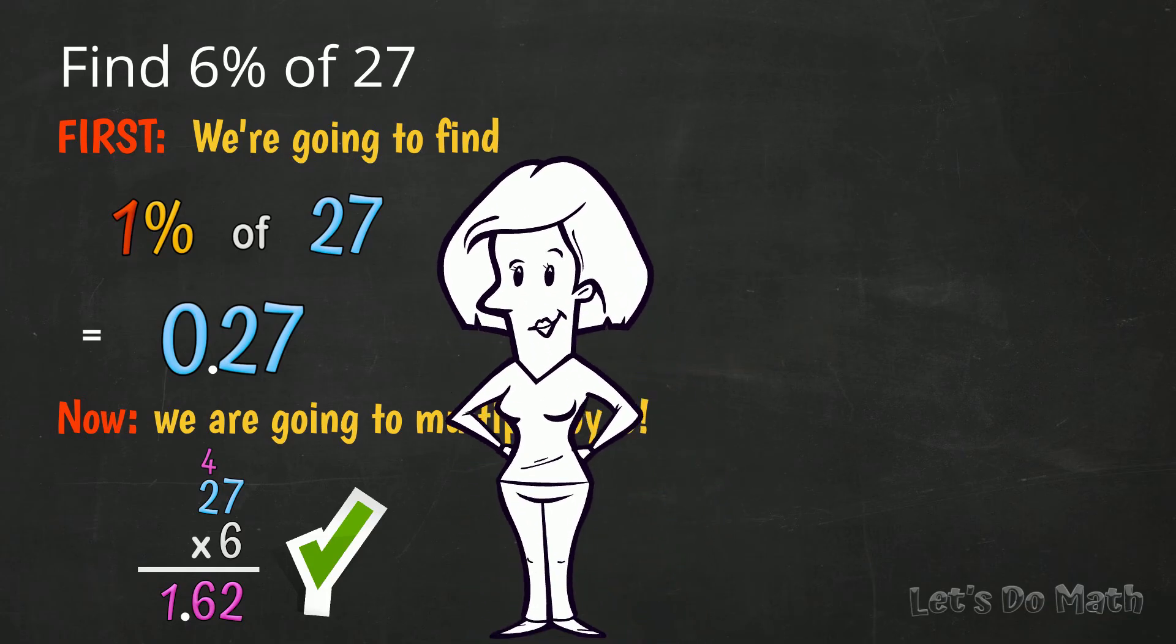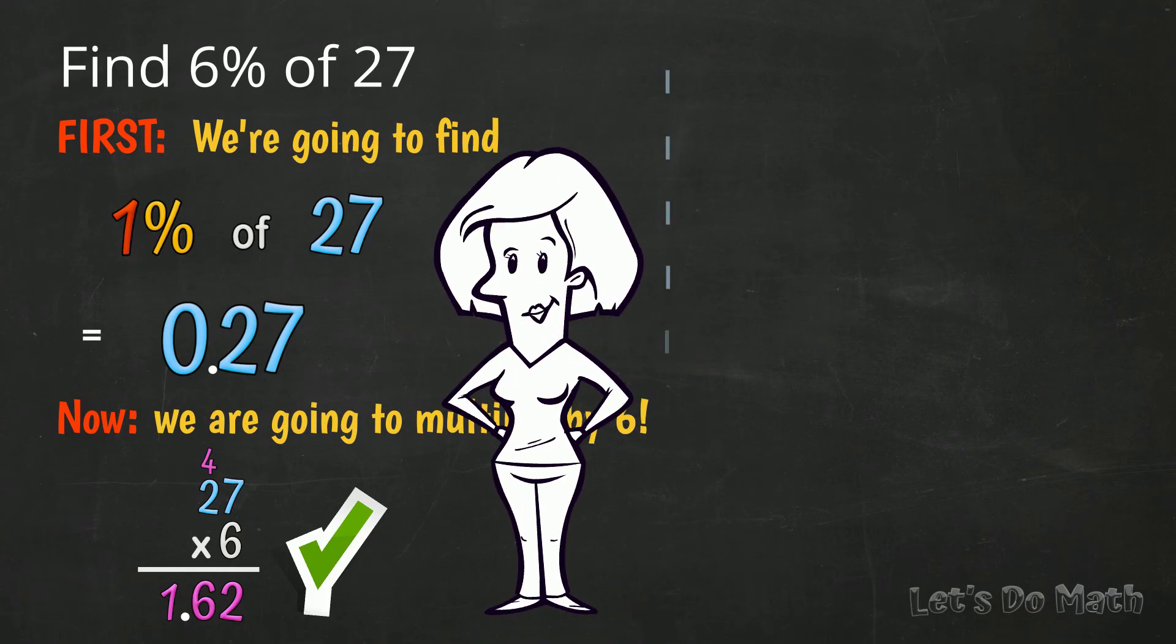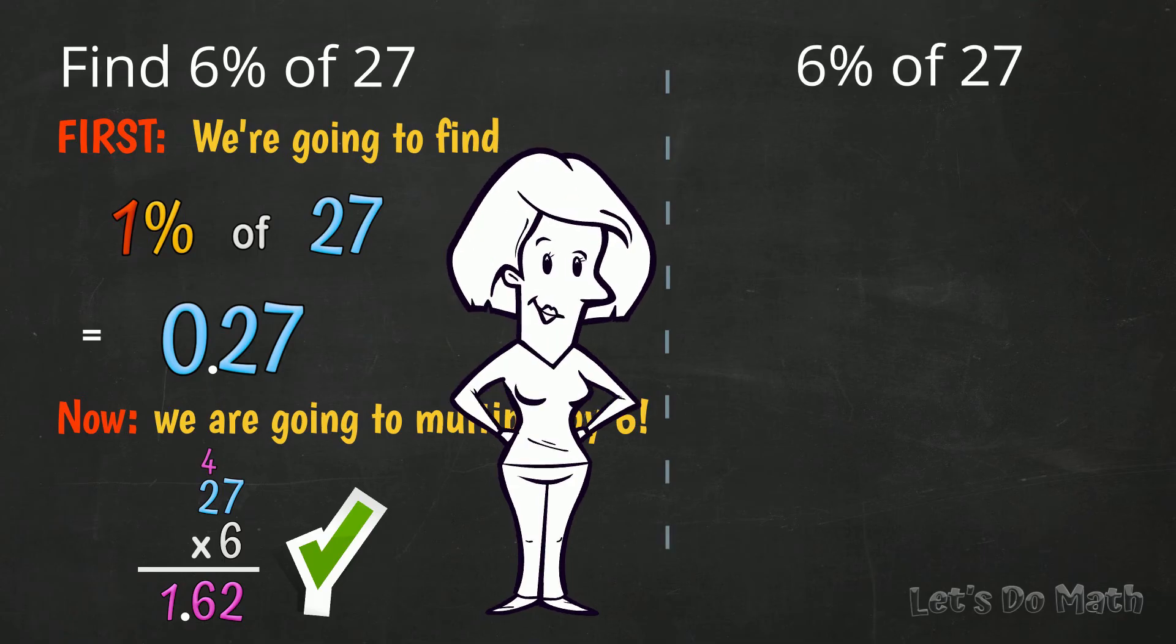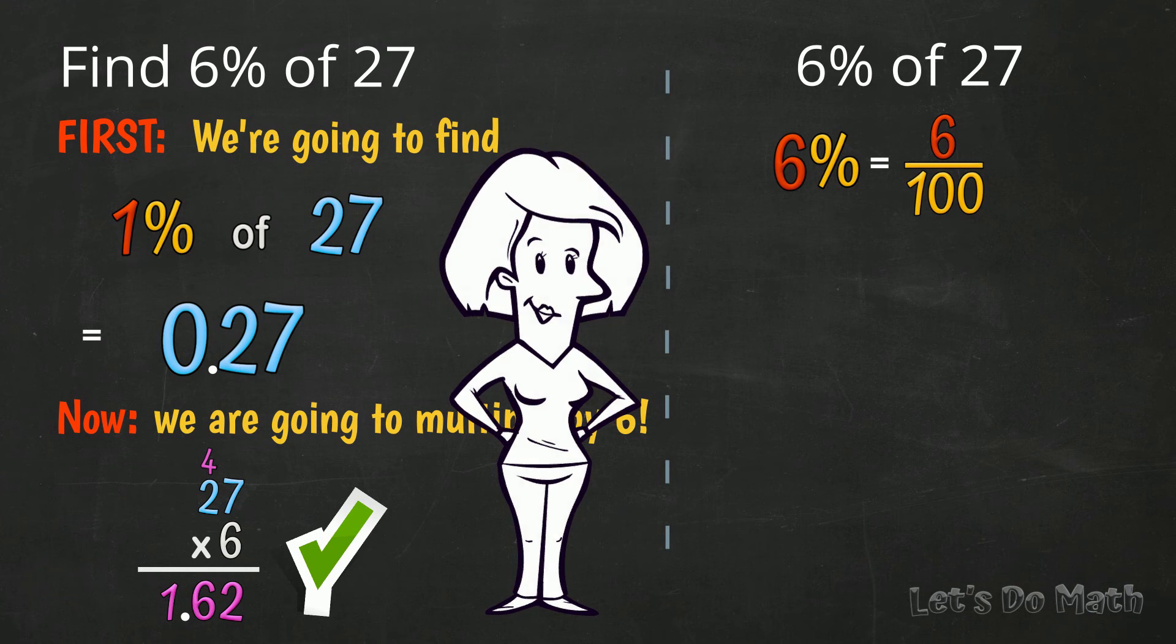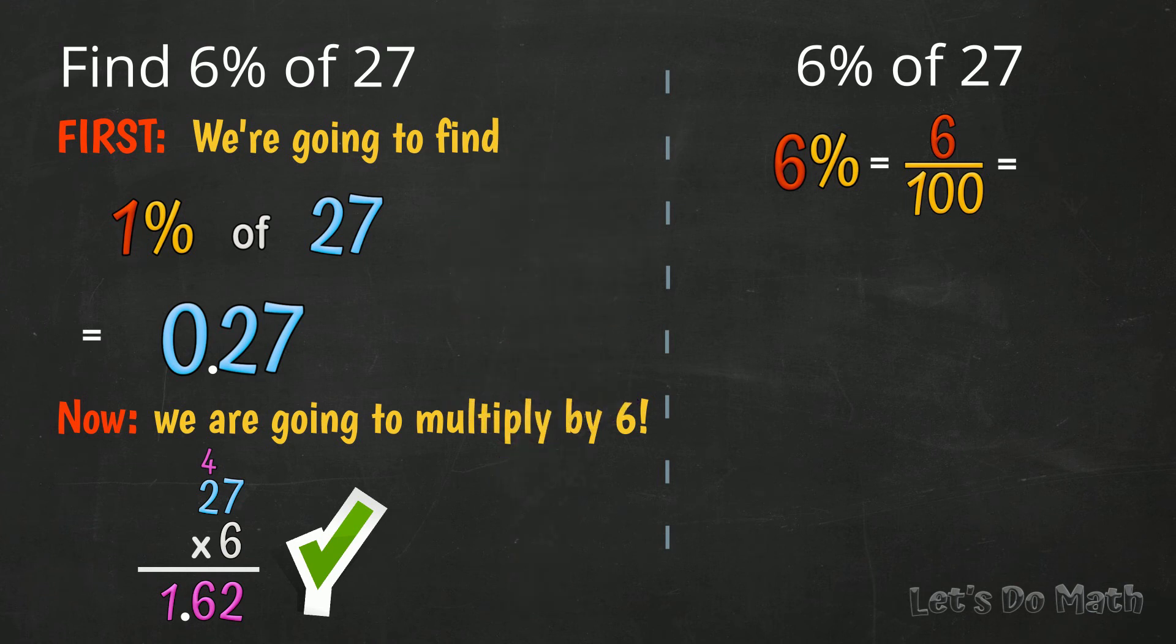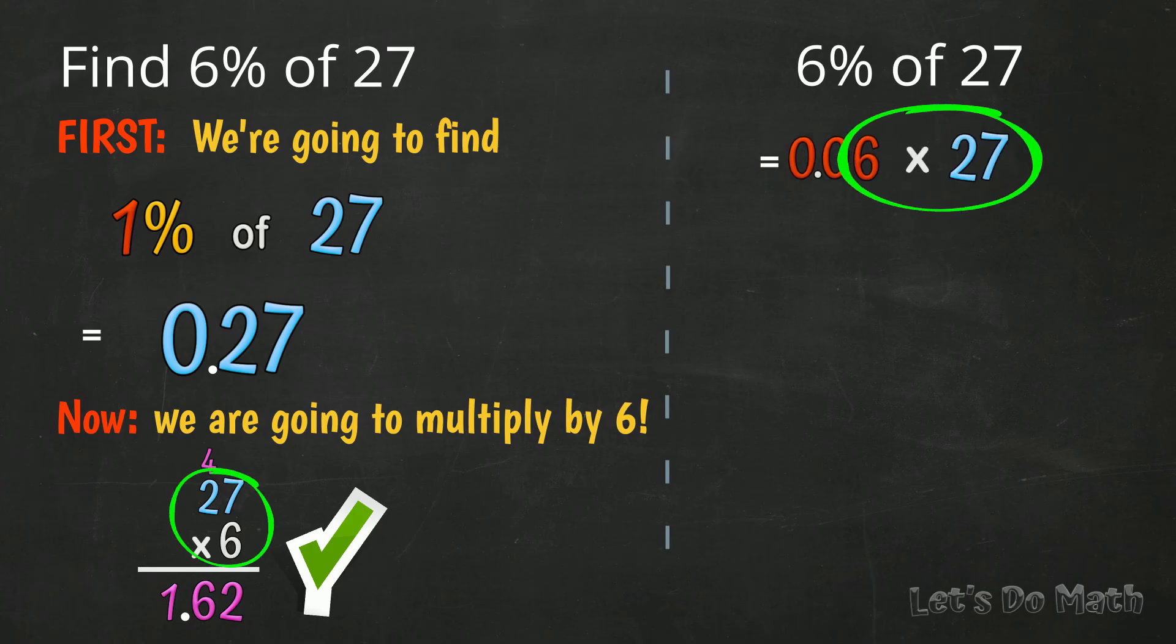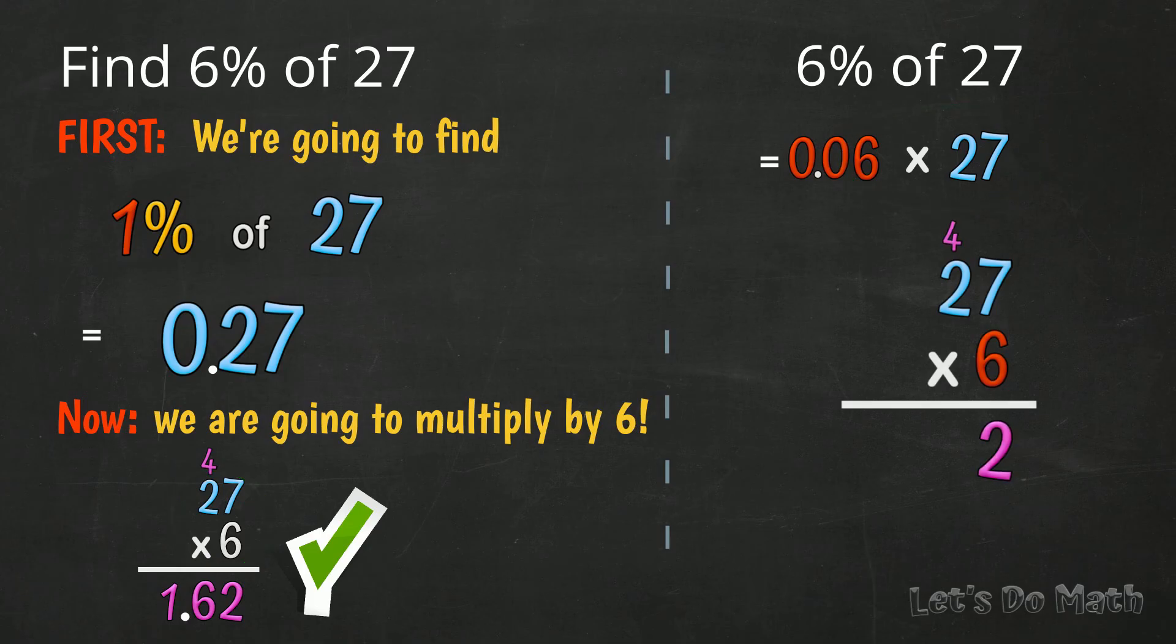When I compare this 1% strategy with the method I usually use, I would say 6% is the same as 6 hundredths. As a decimal, that is 0.06. And I multiply that by 27. I'm multiplying the same numbers so I get the same answer. Both problems have 2 decimal figures. Both give the same result. Nice!